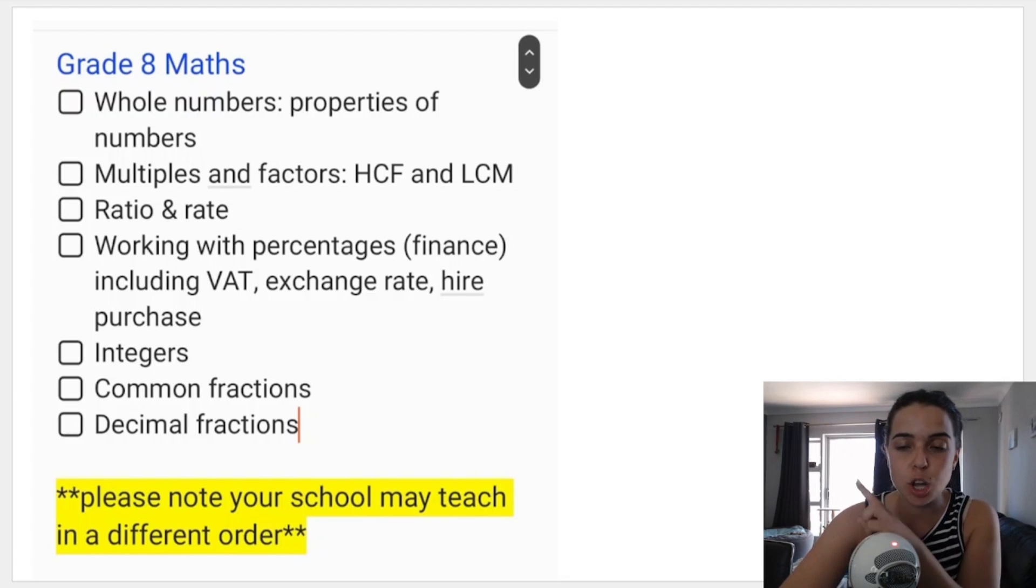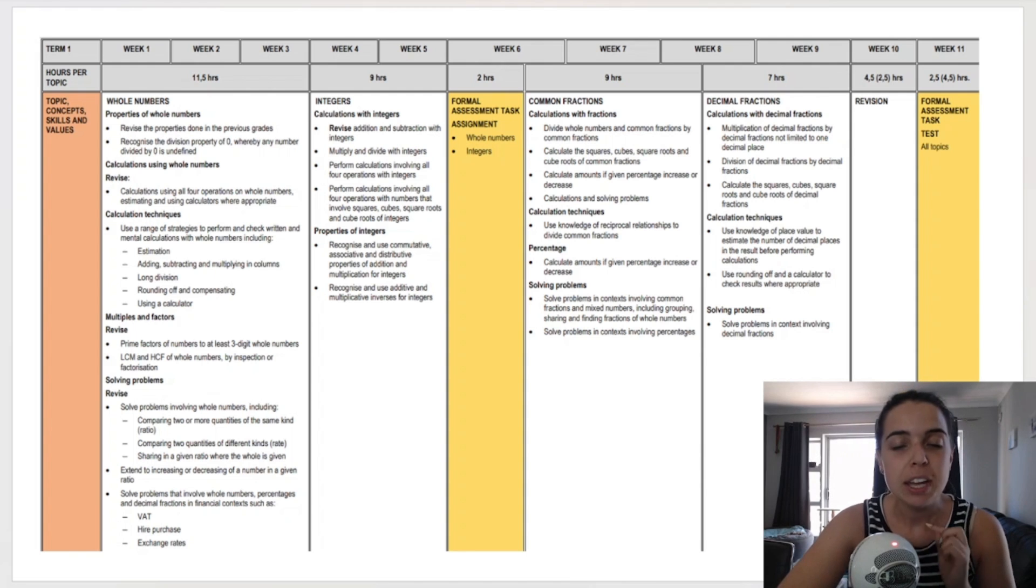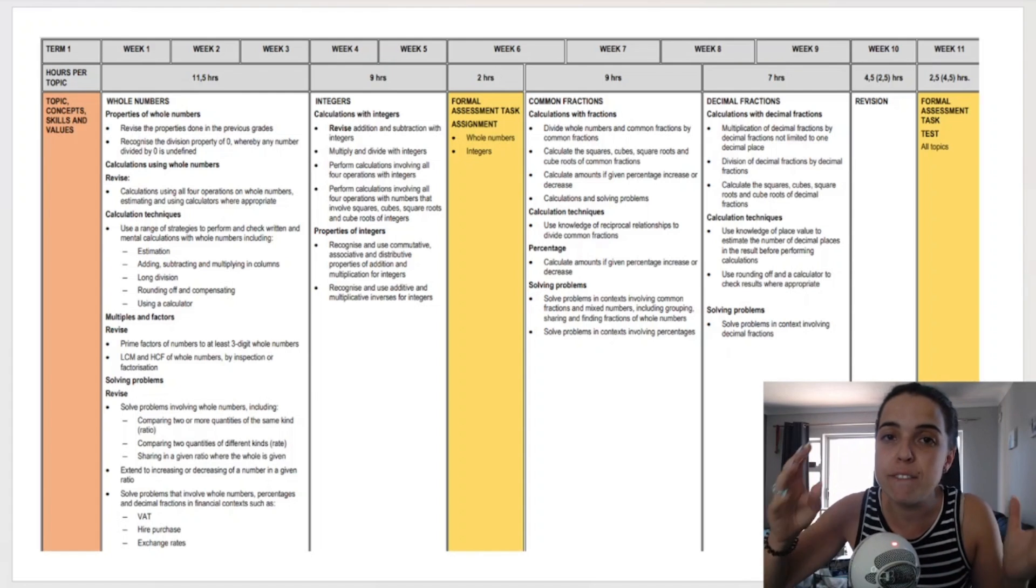Now those are just the basic topics listed. What I've also done for you guys is I've shown you the ATP document. Now this comes off of the Department of Basic Education's website. I will link it in the description box below so you can download the full document for yourself if you want to. You can check out where I got it from. So just credit to that site. That's where I got it from and these are called annual teaching plans. So they are made by the Department of Education.